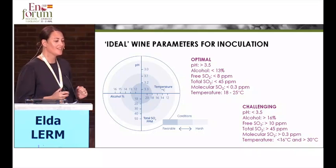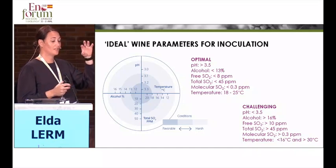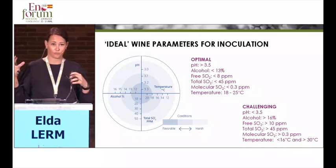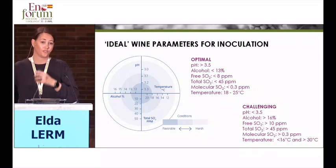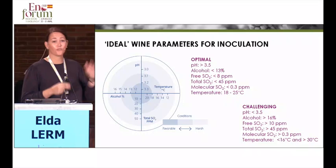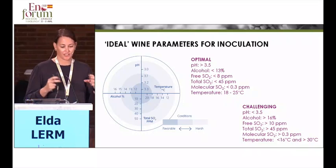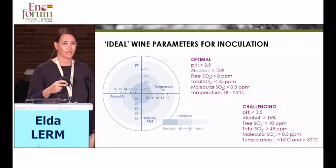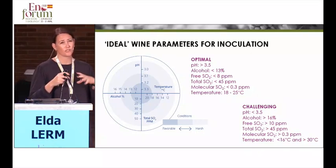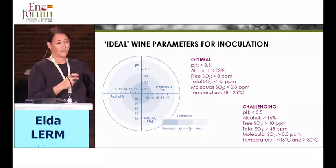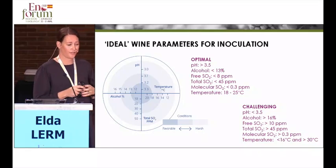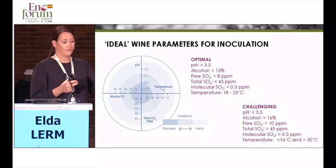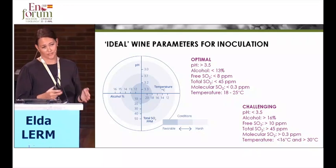If you look at what bacteria really like in terms of pH, sulfur, alcohol, and so on, and you compare that with what they actually have to endure once you put them into the juice or the wine, you can see there's quite a difference. None of these factors operate independently — they all influence each other. You really do have to consider how they interact. This is really where commercial bacteria cultures have come from: natural bacteria like to work in certain conditions, but we need them to work at different conditions.